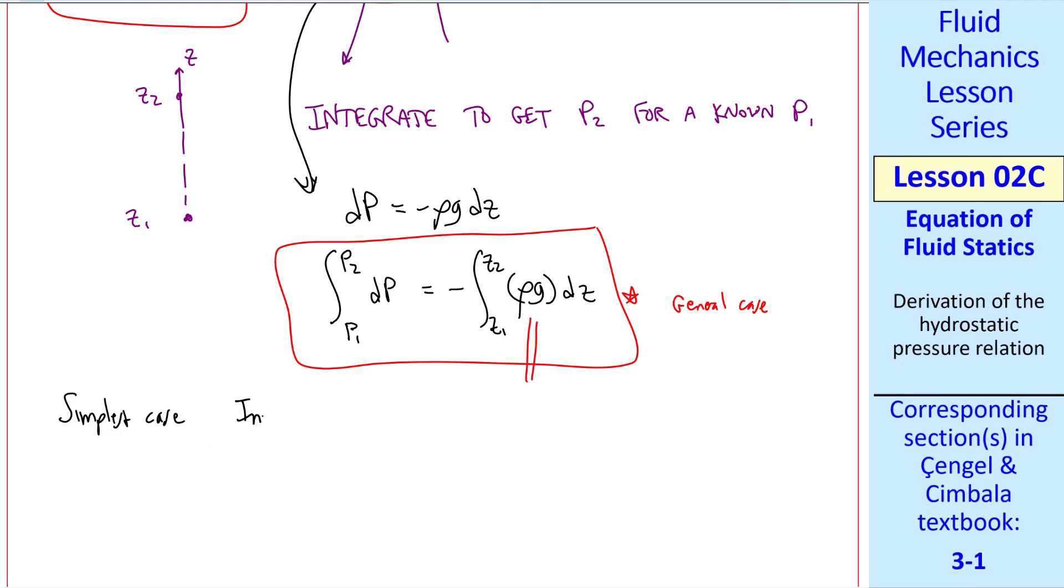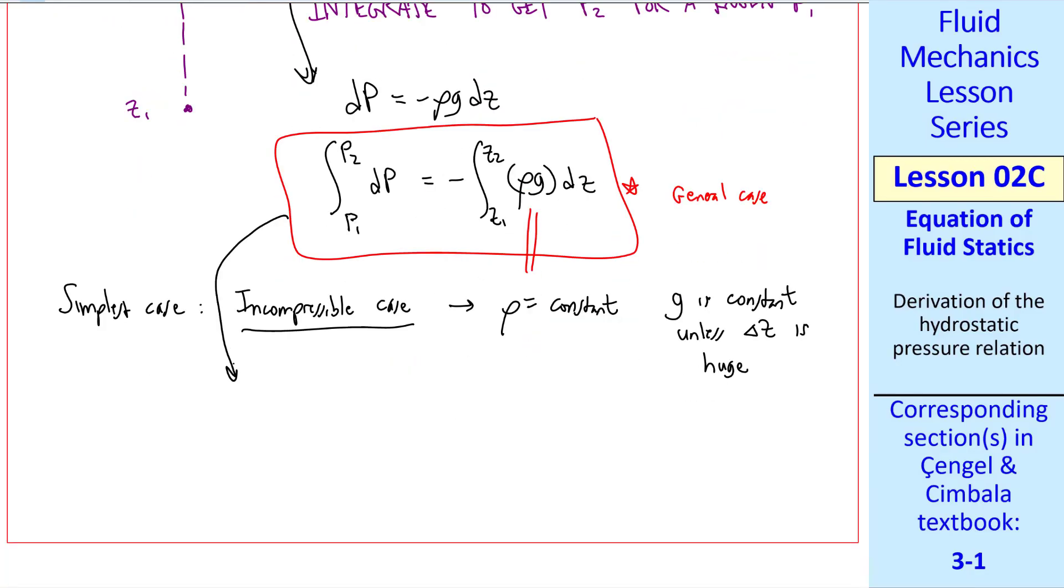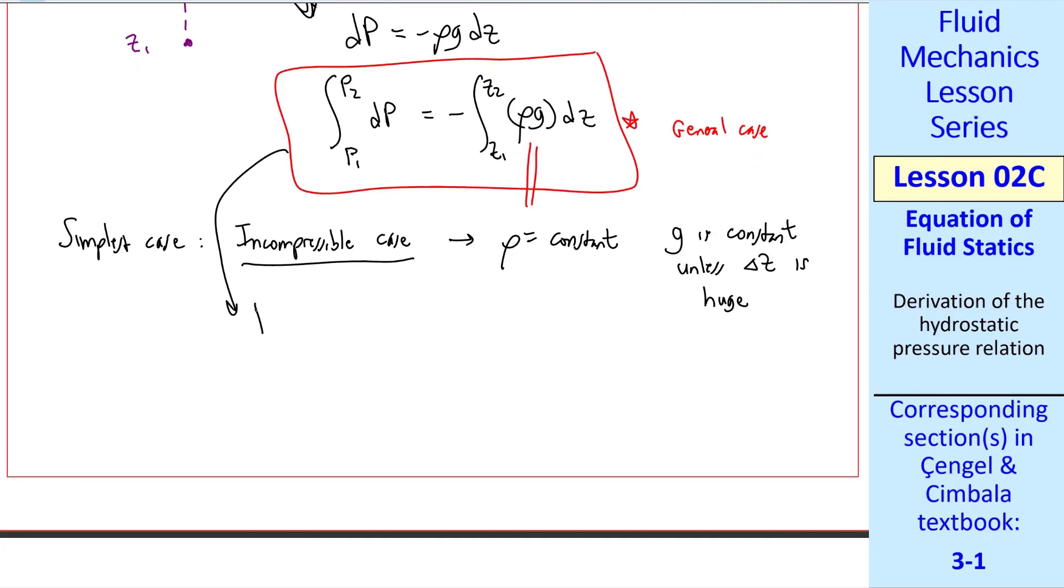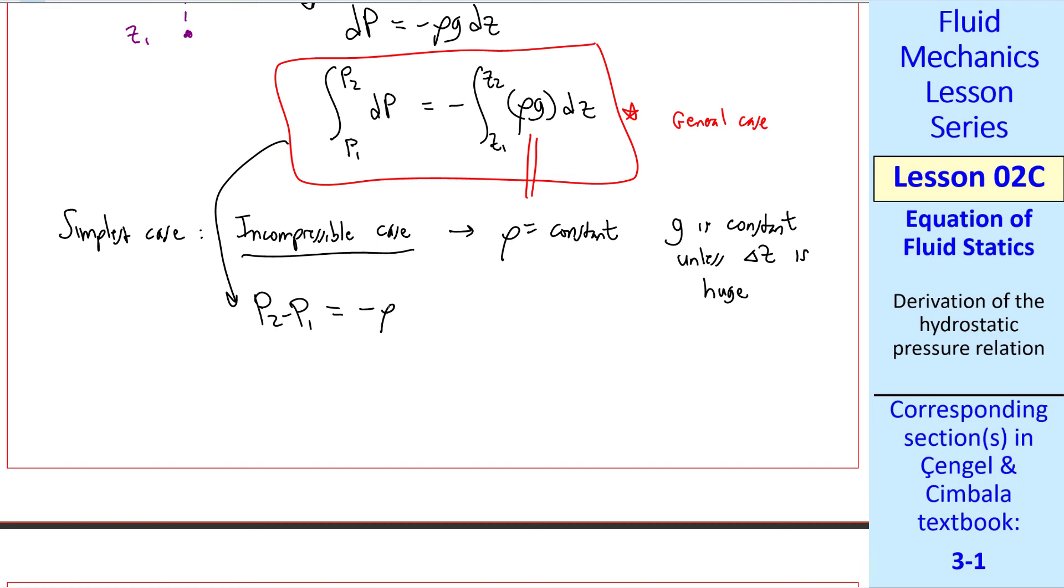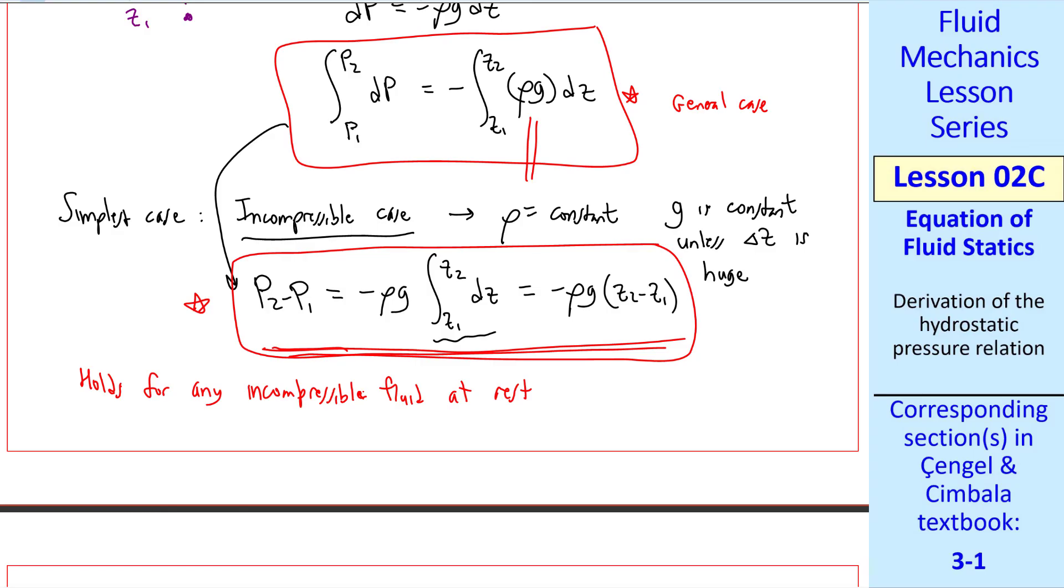Now g doesn't vary much with elevation, so we'll always consider g a constant. But rho can vary with elevation. The simplest case is incompressible, where rho is a constant. And g is constant unless delta z is huge. So for the incompressible case, we integrate p2 minus p1 is equal to... The rho and the g can both come outside the integral since they're constants. And this integral is just z2 minus z1. So for an incompressible fluid in hydrostatics, we simply have this expression. This holds for any incompressible fluid at rest.